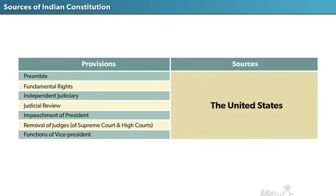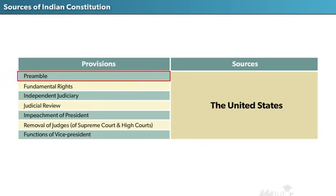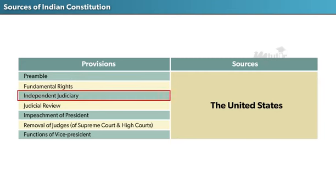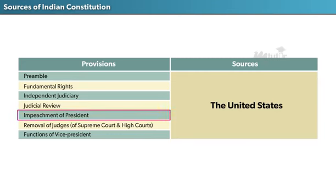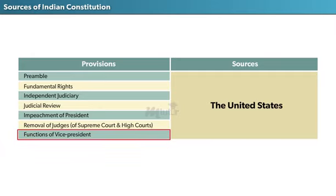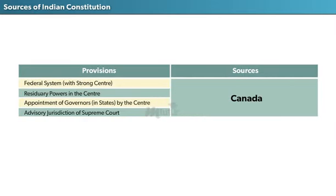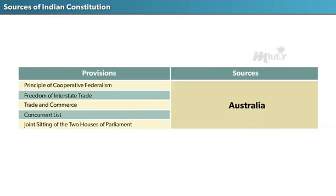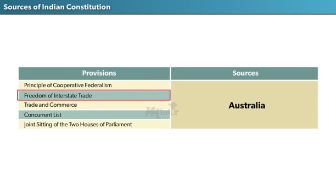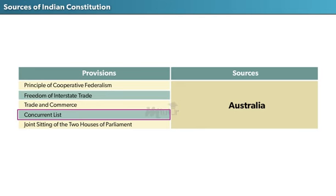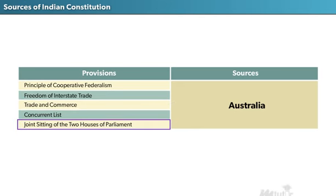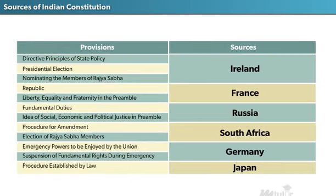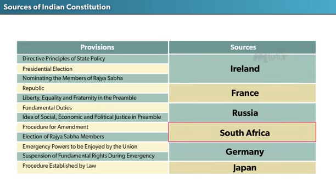We referred to the Constitution of the United States for: Preamble, Fundamental Rights, Independent Judiciary, Judicial Review, Impeachment of President, Removal of Judges, and Functions of Vice President. The Canadian Constitution gave us: Federal System, Residuary Powers in the Centre, Appointment of Governors by the Centre, and Advisory Jurisdiction of the Supreme Court. From the Australian Constitution we took: Principle of Cooperative Federalism, Freedom of Interstate Trade, Trade and Commerce, Concurrent List, and Joint Sitting of the Two Houses of Parliament. We also drew provisions from the Constitutions of Ireland, France, Russia, South Africa, Germany, and Japan.